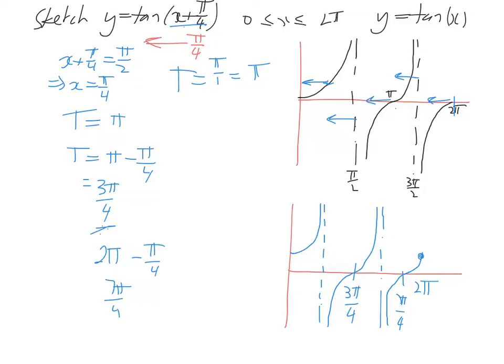But as for our asymptotes, we've got 1 at pi on 4. And we've got to add pi to that.